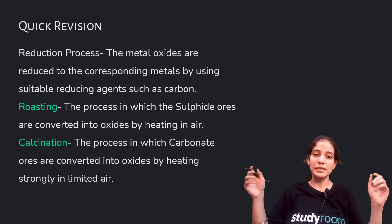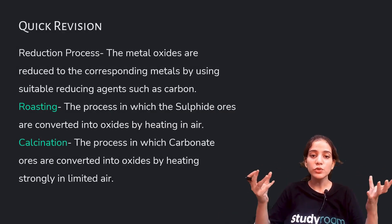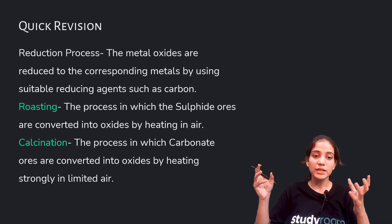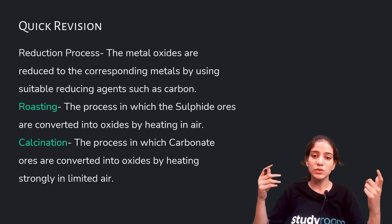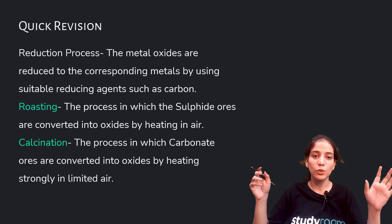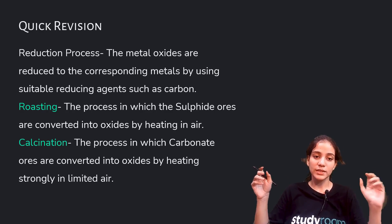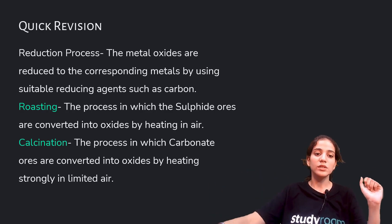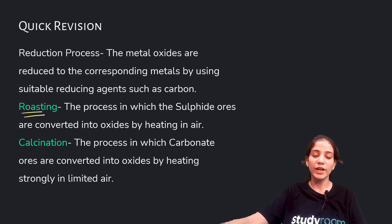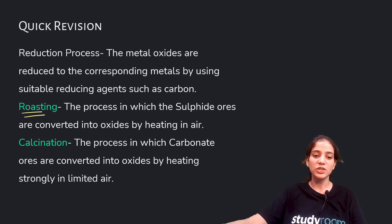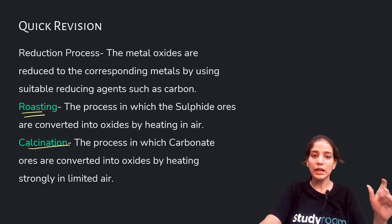Now, reduction process. Metal oxides are reduced to the corresponding metals by using suitable reducing agents such as carbon or coal, depending upon the metal. Roasting is the process where sulfide ores are converted into oxides by heating in air. For calcination, carbonate ores are converted into oxides by heating strongly in limited air.